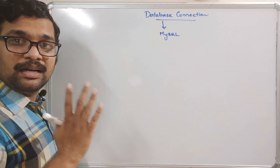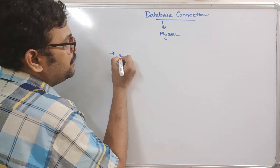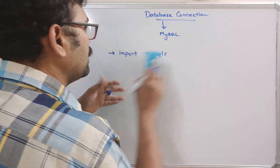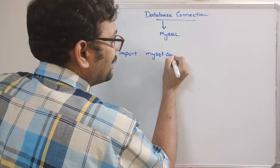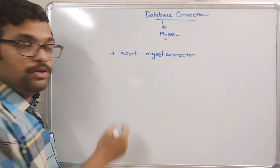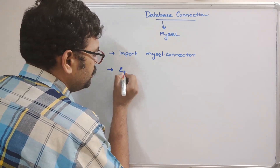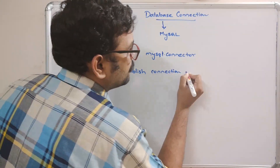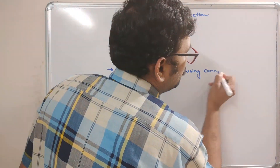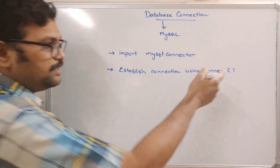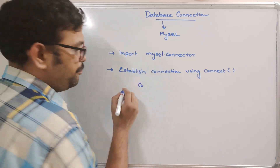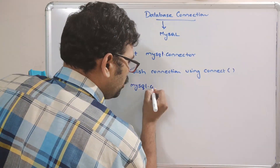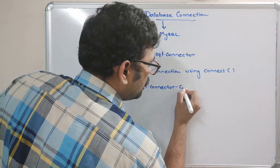For the connection we require four steps. The first one is to import a module called mysql.connector. So first we need to import this module, and after that we have to establish the connection using the connect method. This connect method will be called with the help of the module name: mysql.connector.connect.